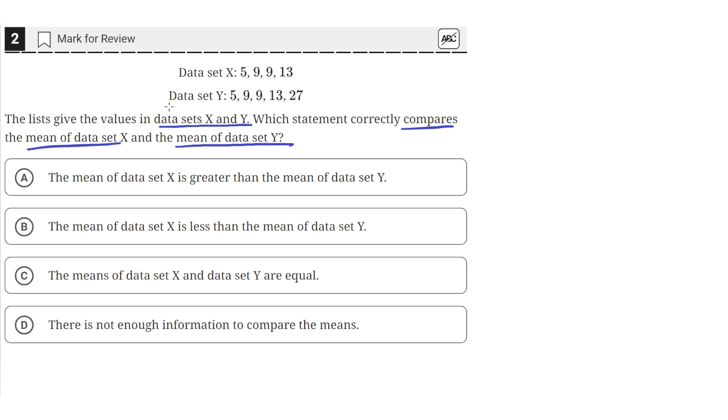So we have these two data sets with these values, and as we can see, the values 5, 9, 9, and 13 are common to both data sets. But data set Y has this extra 27 in it.